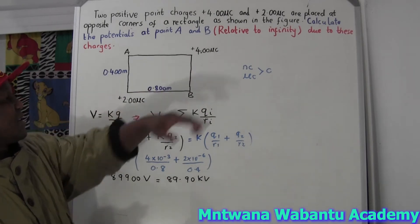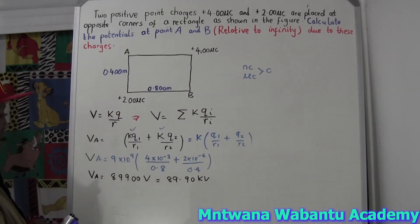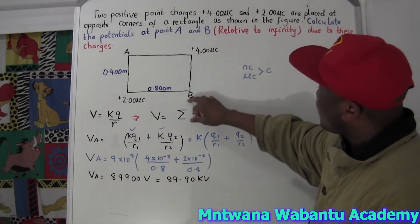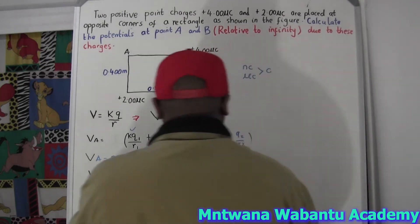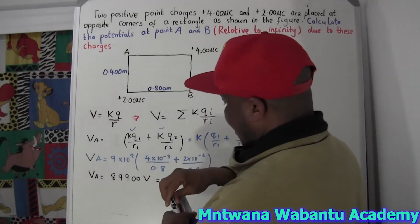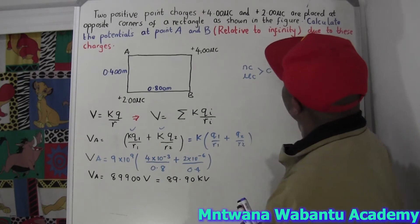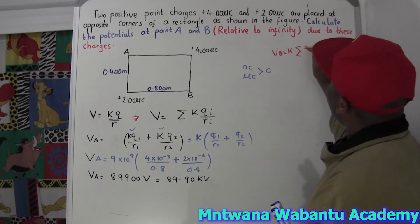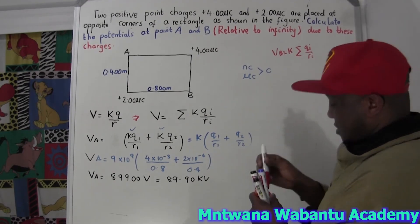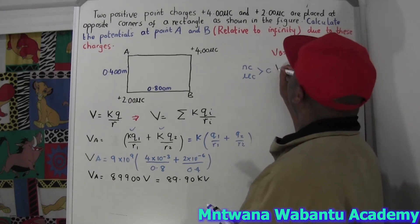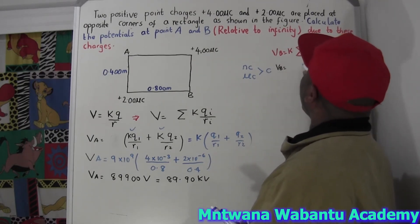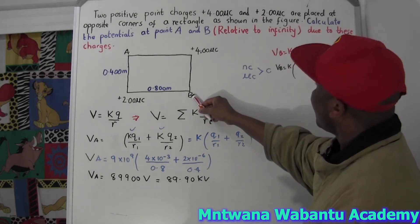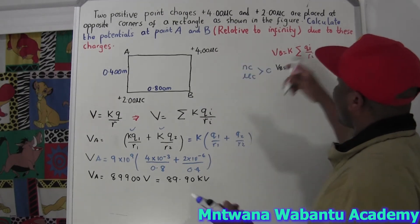Now let's do the same thing for point B — the potential relative to infinity. For point B, we consider B with this charge and B with that charge. So the electric potential of B equals K times the sum of all Q over R.